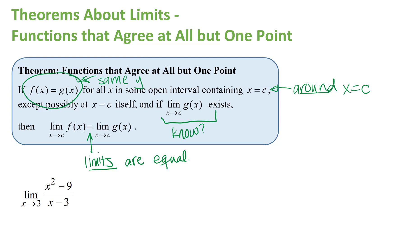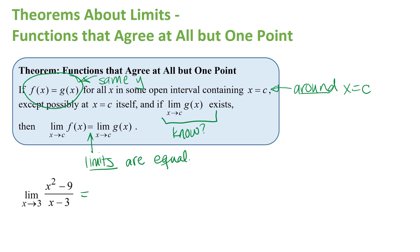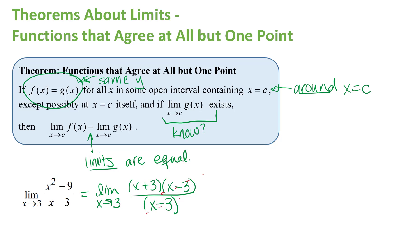For this rational function, I can do a little algebra to rewrite it. I'm being very careful to keep the limit notation — I'm not evaluating the limit yet, just doing algebra on the function. The numerator is a difference of squares: you can factor that into (x + 3)(x - 3), and there are common factors of (x - 3) in the numerator and denominator. We can cancel those factors, giving us the limit as x approaches 3 of just (x + 3).